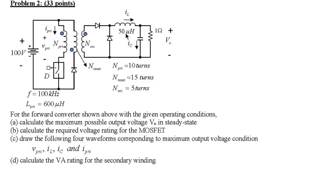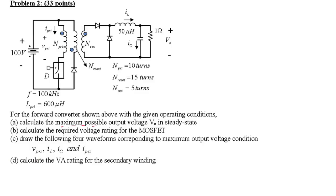We're also given the load resistance and the output filter inductance. Part A requires us to calculate the maximum possible output voltage V_out in steady state. Note that we are not given the duty ratio, and even if it were given, we wouldn't know if it results in maximum output voltage. What we want is D_max. Since N_primary is 10 and N_reset is 15, D_max is not 0.5 and must be calculated using the equation relating D_max to the turns ratio N_primary over N_reset.